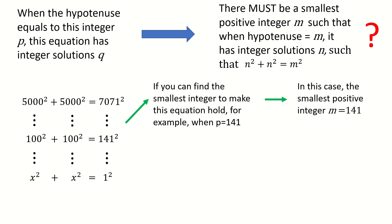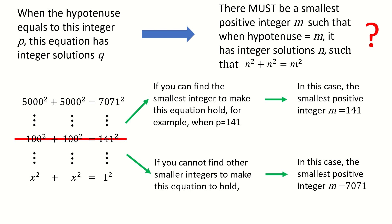And another possibility is if we cannot find other smaller integers to make this equation hold. In this case, the smallest positive integer m equals 7071, which is the solution in the very beginning equation.